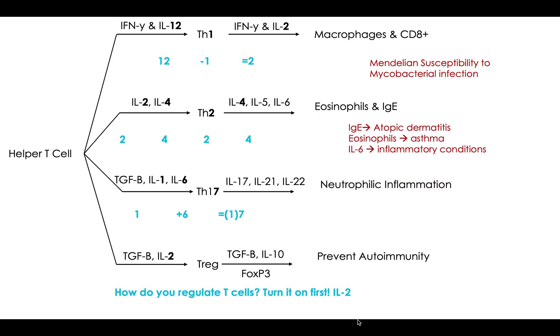Next, we have Th2. And if we're turning on IgE and eosinophils, we're definitely thinking some type of allergy, right? So atopic dermatitis, maybe asthma. And then IL-6 for acute phase reactants is going to do inflammatory conditions. So you can remember Th2 is in ulcerative colitis, and that's going to be an inflammatory condition. So you're going to have an increase in your IL-6.